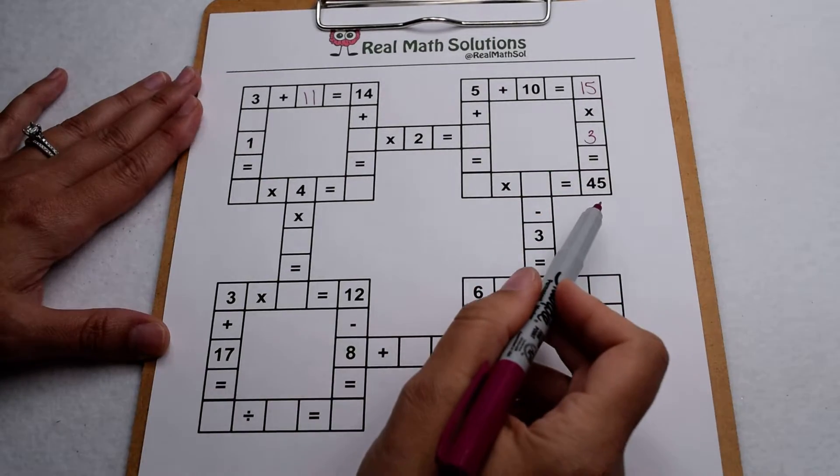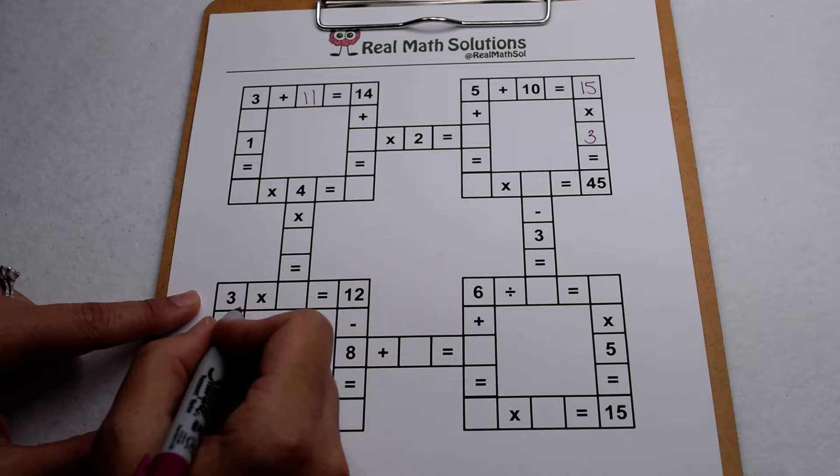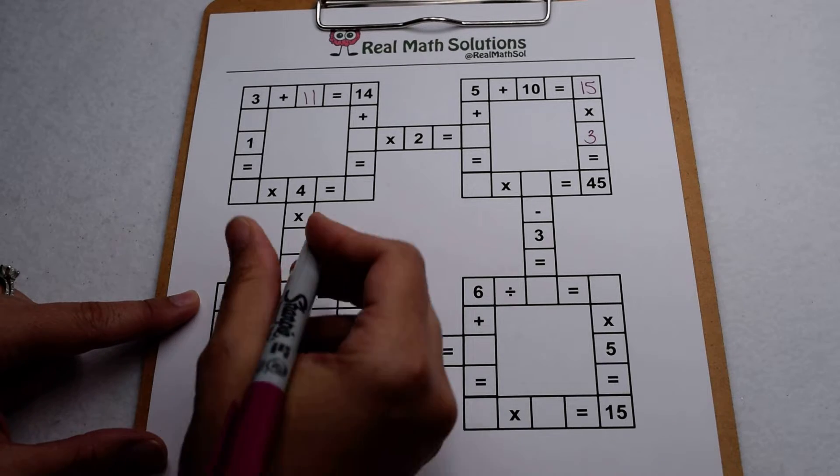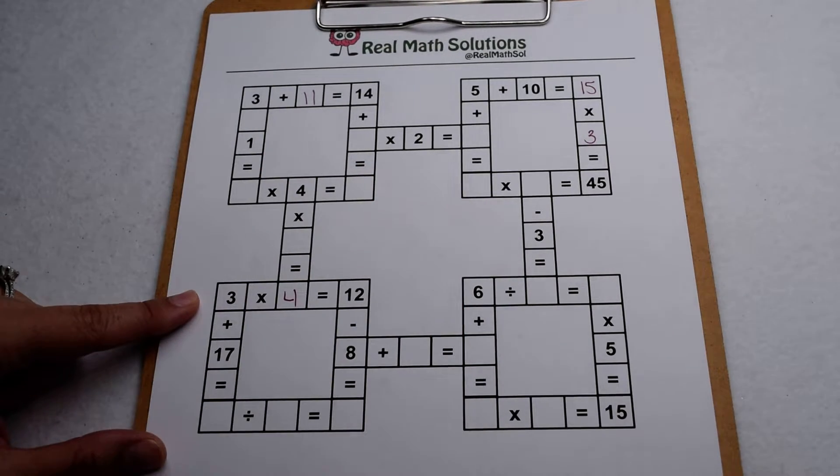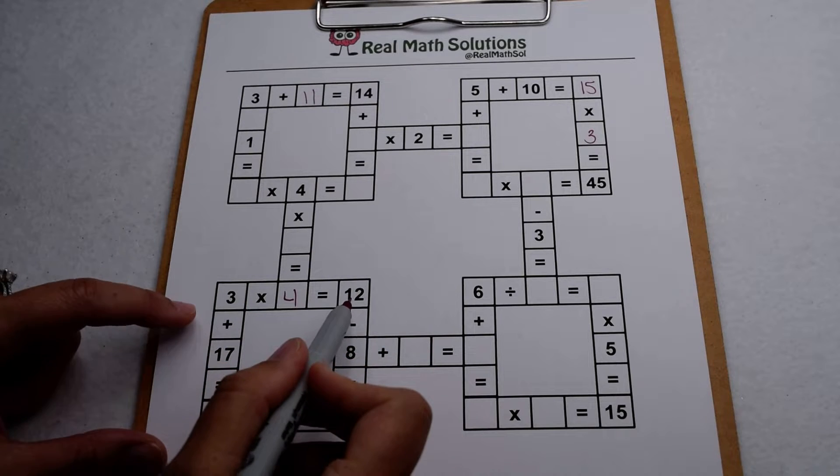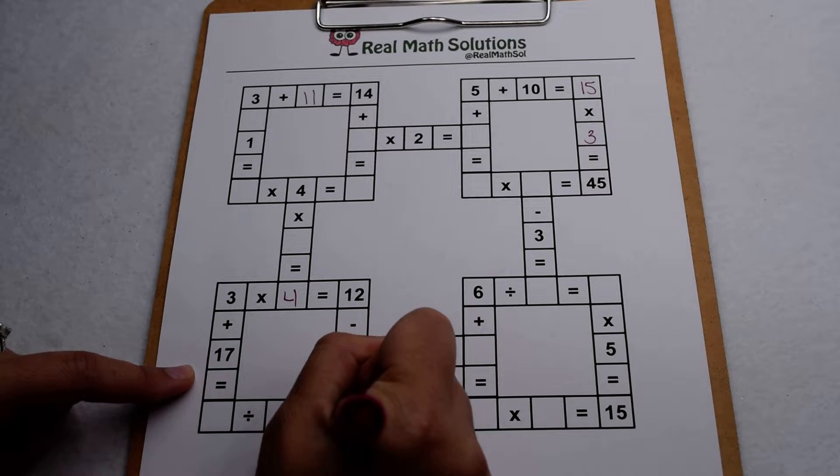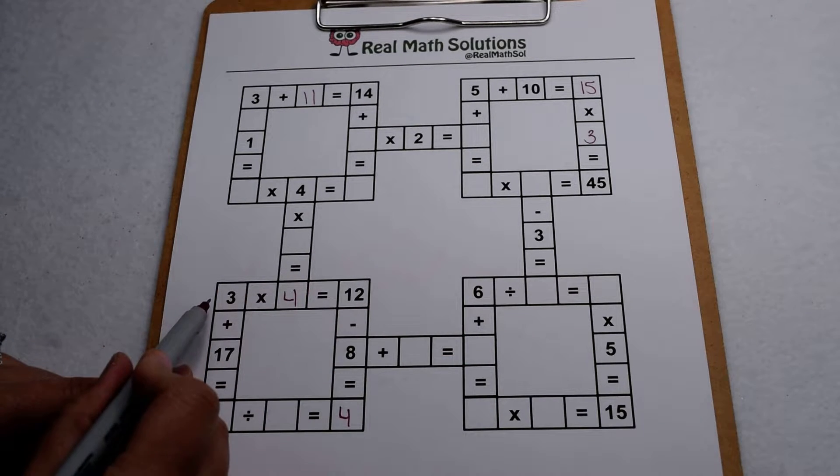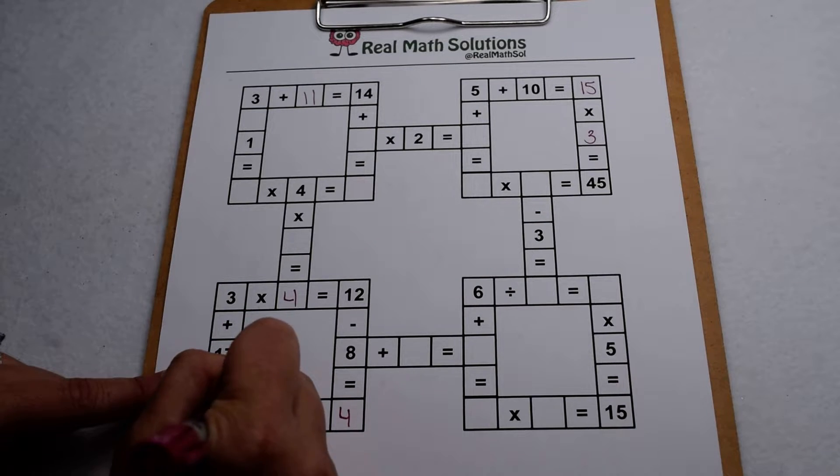That's about as far as we can go on this box for now so we're gonna come over here to this bottom left square and see what we can do. 3 times 4 is going to give me 12 so I can go ahead and fill in that one. If I come down here 12 minus 8 is also gonna give me 4 and I can come down here, 3 plus 17 is going to give me 20.